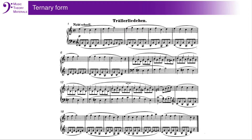In this piece, we hear three parts. The first section starts in measure 1 and ends in measure 8. We will call this A. We hear this material return from measure 17 to measure 24. If we compare measures 17 to 24 to the first eight measures, we find that they are almost exactly the same. The only difference is an A5 added in measure 22. Since this is a very small difference, we will call this section A, not A prime.